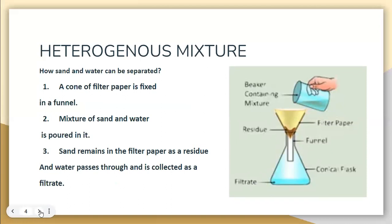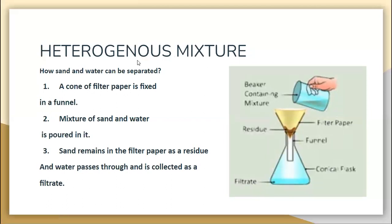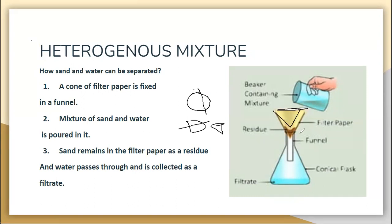For heterogeneous mixtures like sand and water, we use filtration. We make a cone from filter paper — filter paper is a semi-permeable paper available in school laboratories. First cut it in a circle, fold it into a half D-shape, then fold again into a cone or triangular shape. This yellow cone of filter paper is then fixed into a funnel.